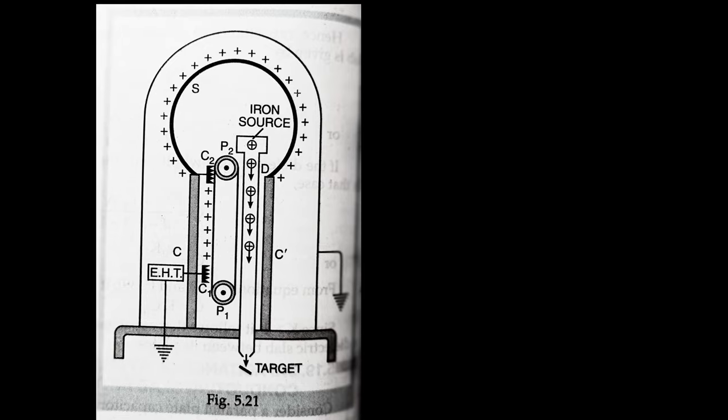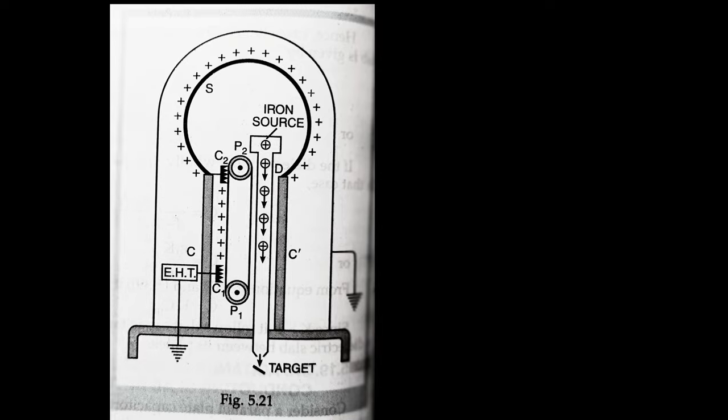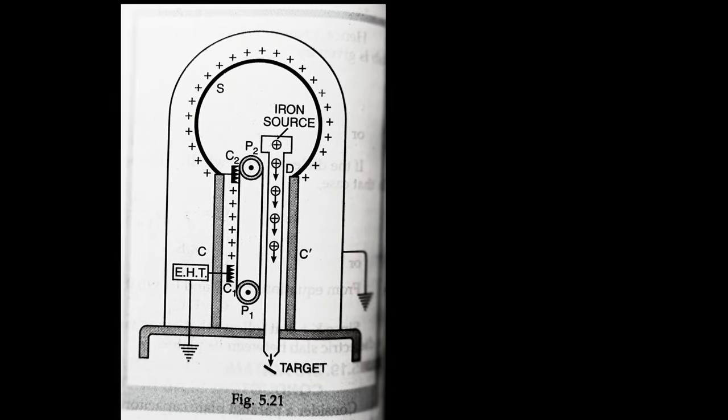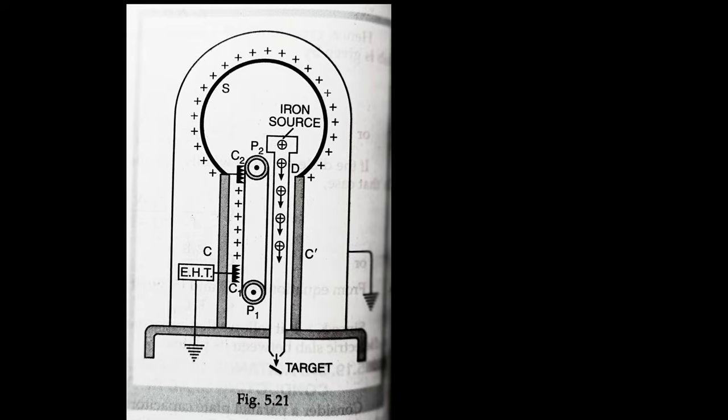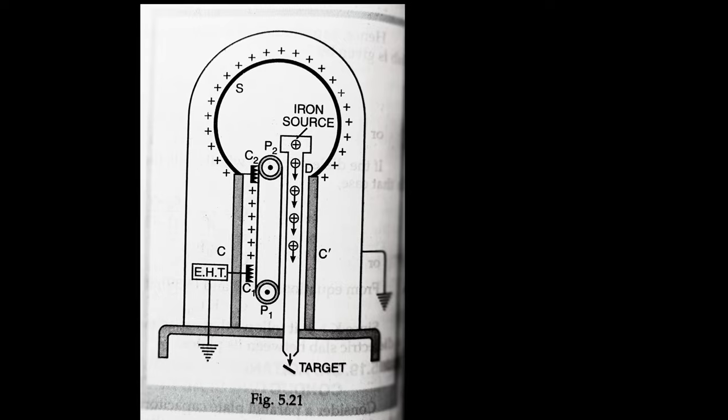When the spray comb is maintained at high positive potential with the help of an EHT source, approximately 10^4 volts, it produces ions in its vicinity. The positive ions get sprayed on the belt due to the repulsive action of comb C1.